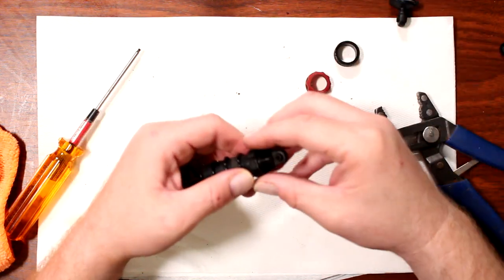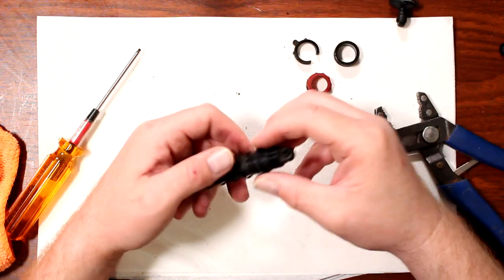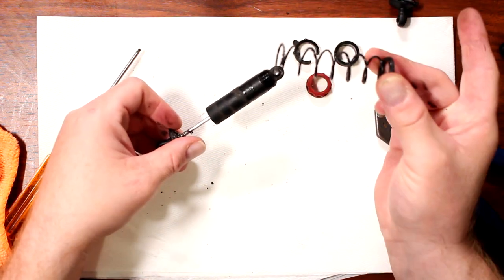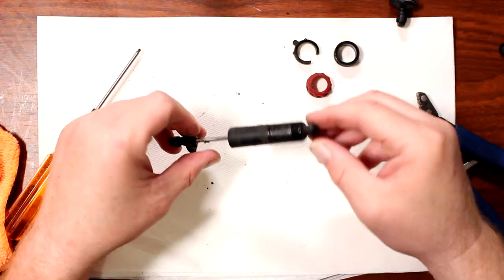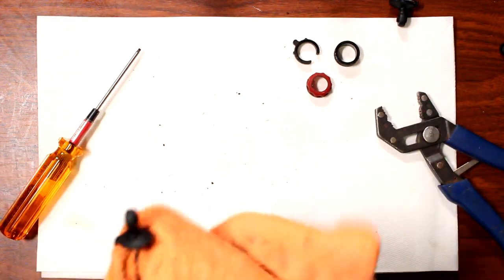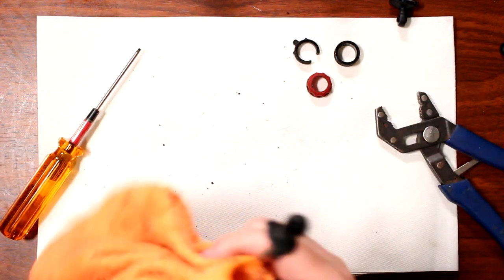Basically you remove your spacer, your tensioner, and you have your spring. Take the time and clean the rest of the shock.